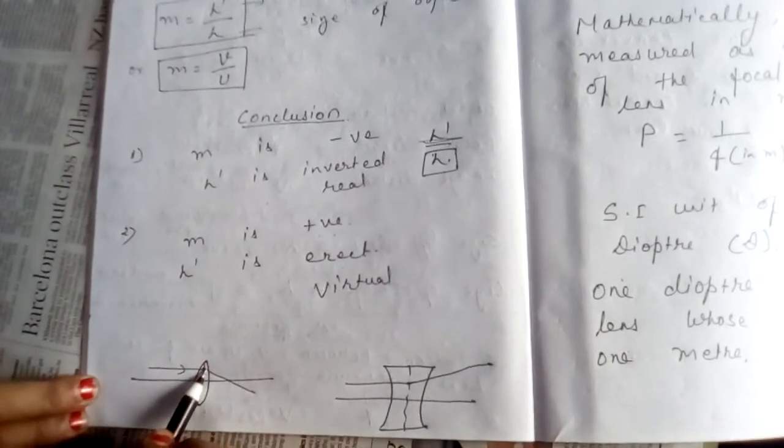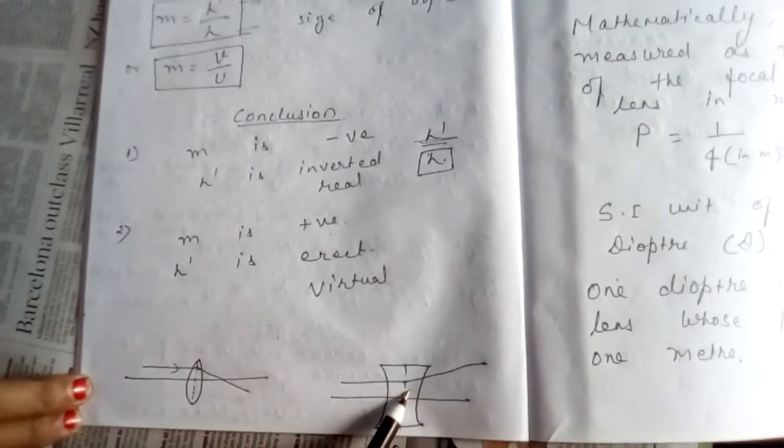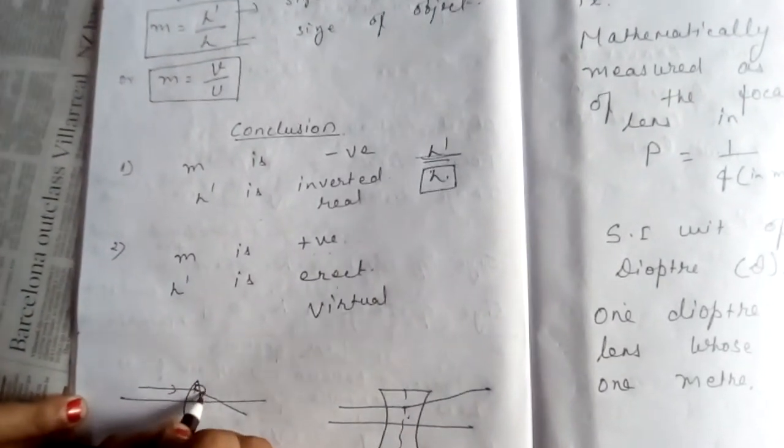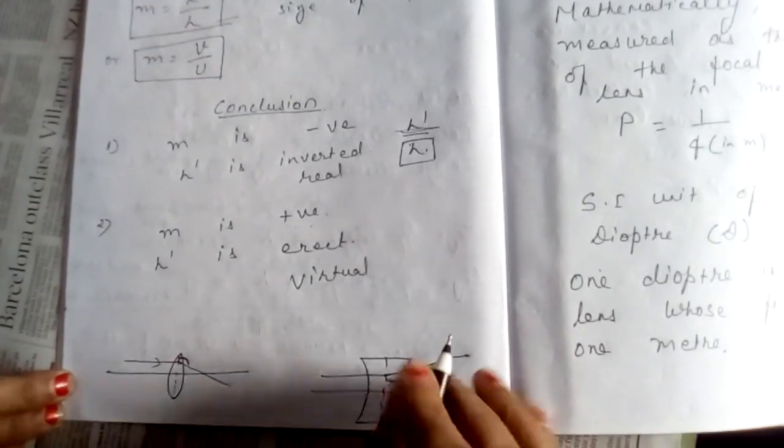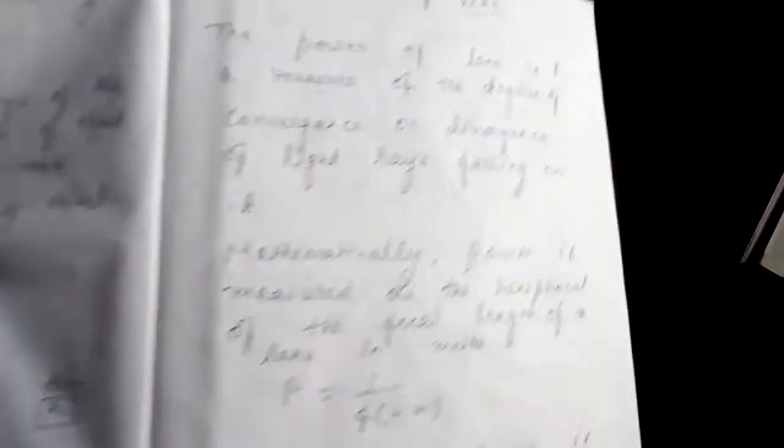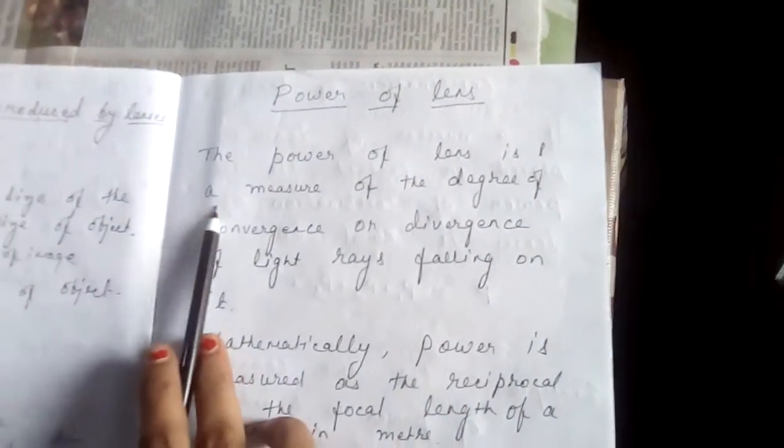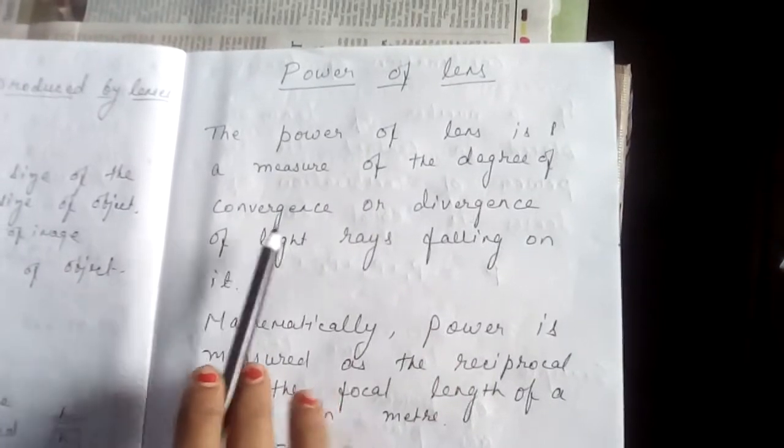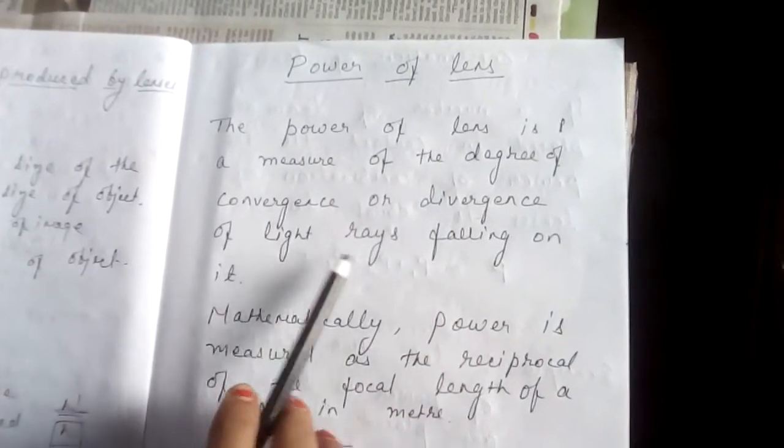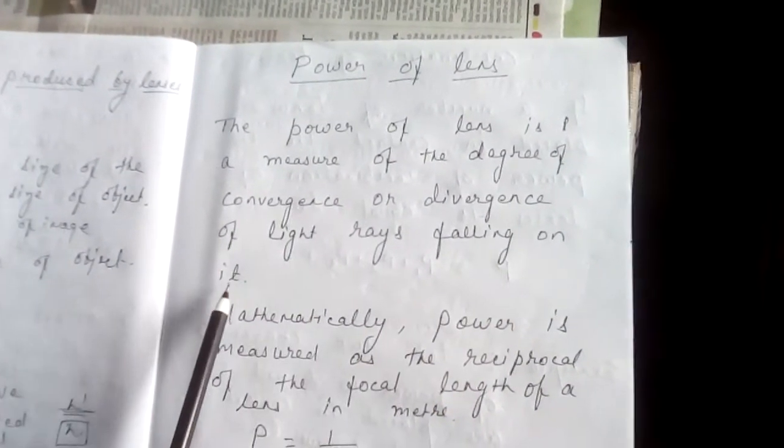Either it converges or it diverges. This is the convergence and this is the divergence. So, here you see, the power of lens is measured as the degree of convergence or divergence of light rays falling on lenses.